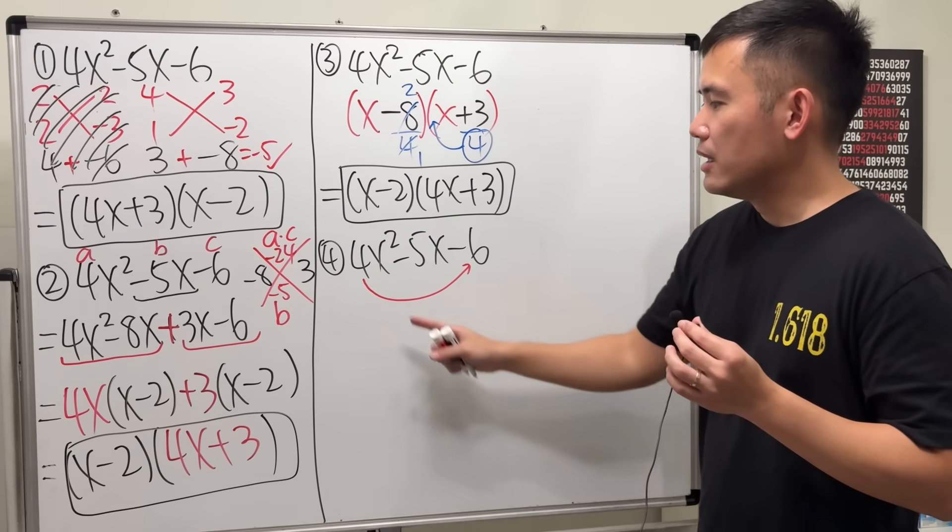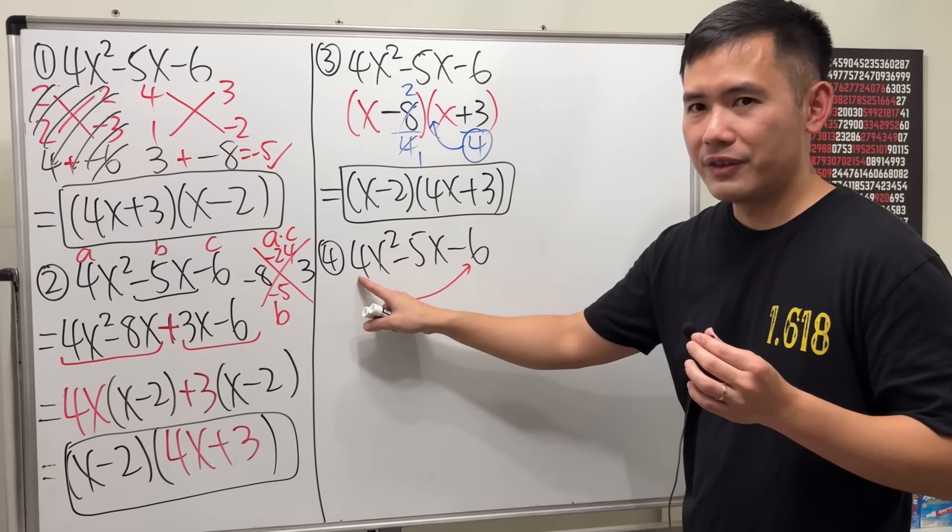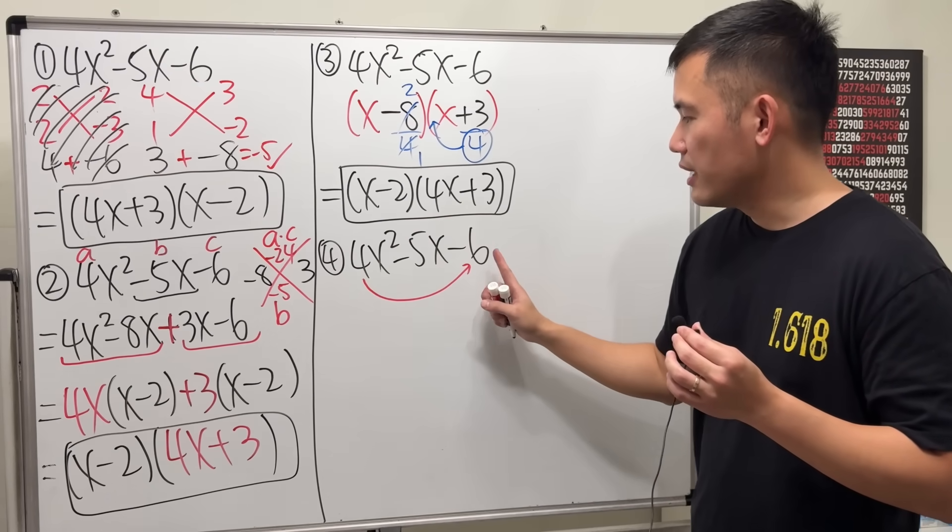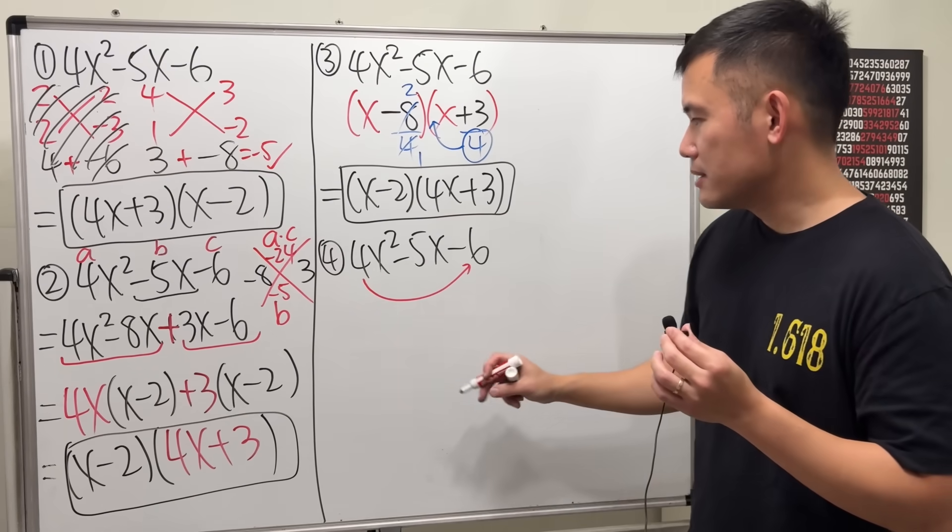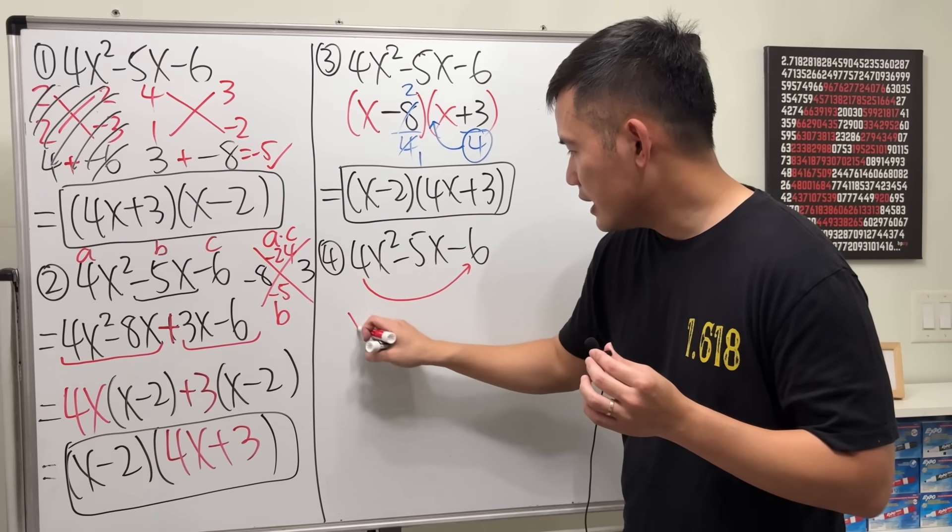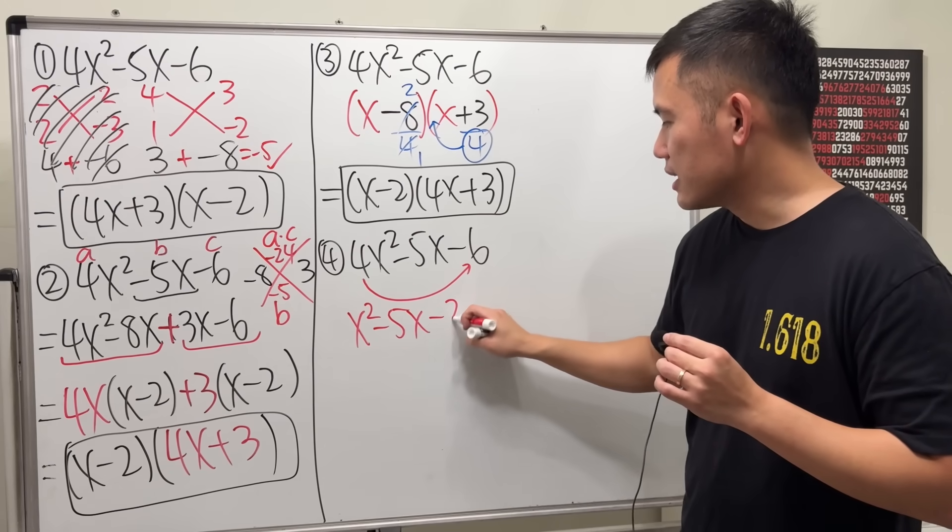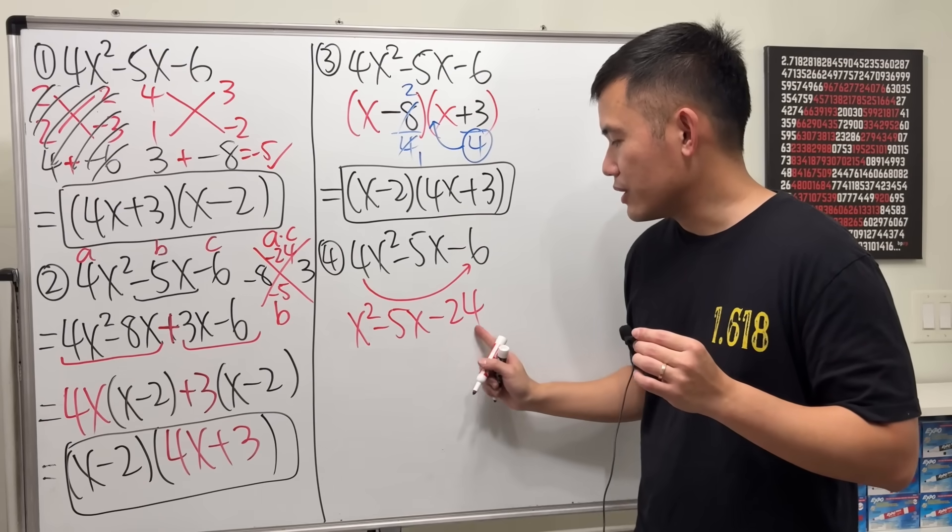The idea behind this is that, to factor this right here. It's hard because we have the 4 in front of the x squared. But, imagine if you just put the 4 together with negative 6. Multiply that. And, see what happens. We will get just x squared minus 5x. 4 times negative 6 is negative 24. 4 times 6. It's 24 and then the minus.